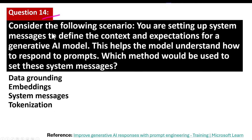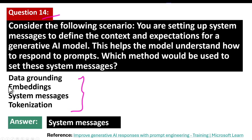Question number 14. Consider the following scenario: you are setting up system messages to define the context and expectations for a generative AI model, which helps the model understand how to respond to prompts. Which method would be used to set these system messages? The correct answer is system messages.